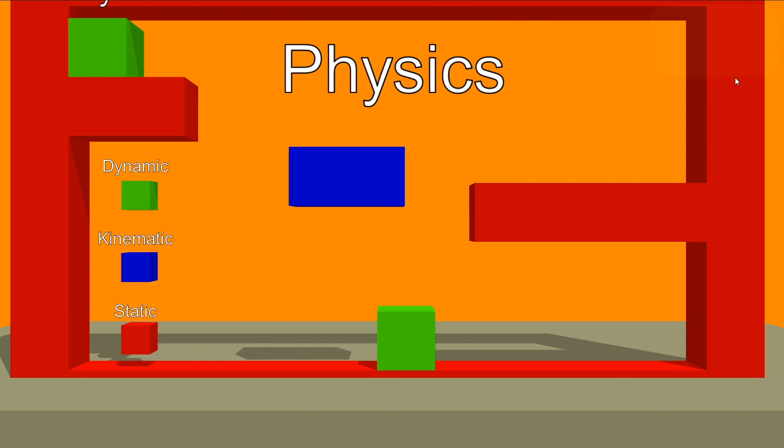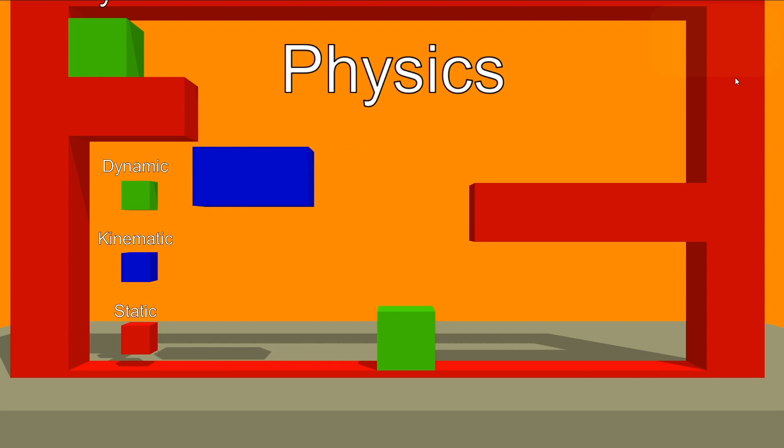Now let's take a look where we can select a type of physics in BuildBox and then we can take a look how we set it up in Unity.